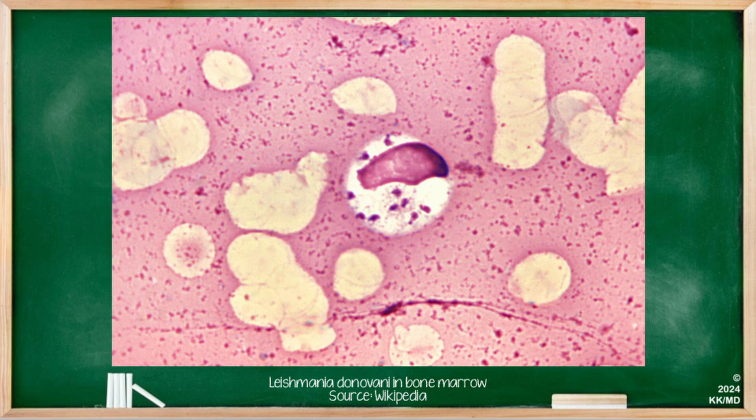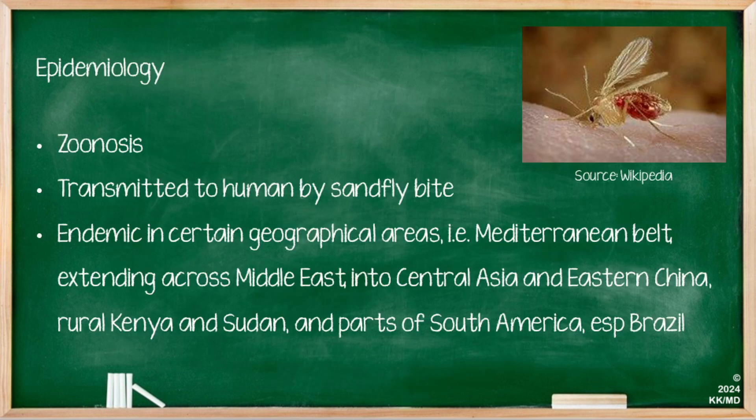This is a picture of Leishmania donovani in the bone marrow. It's very unlikely that they ask you this in the MRCP exam, but it's always good to have a rough idea about what a histopathology of a particular bacteria or virus might look like. The epidemiology of Leishmania is that it is a zoonosis infection, transmitted to humans by sandfly bite.